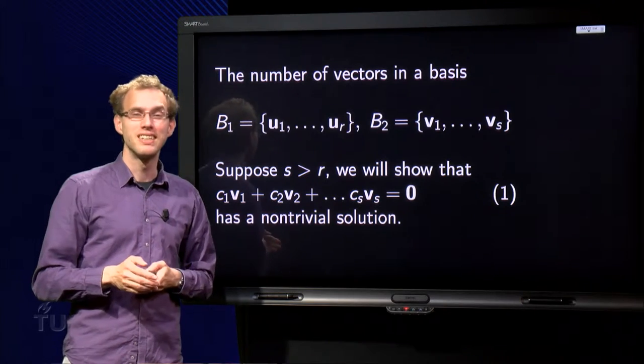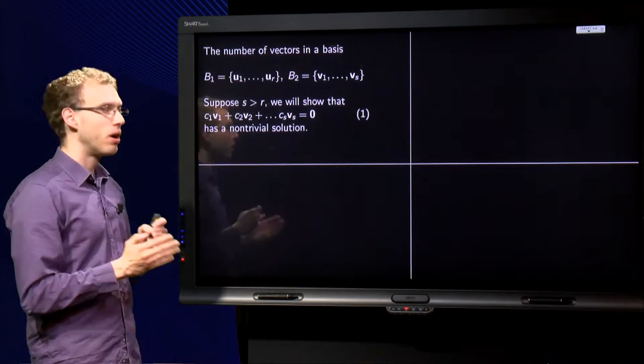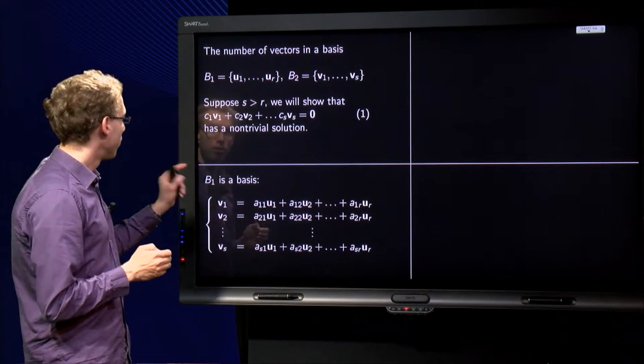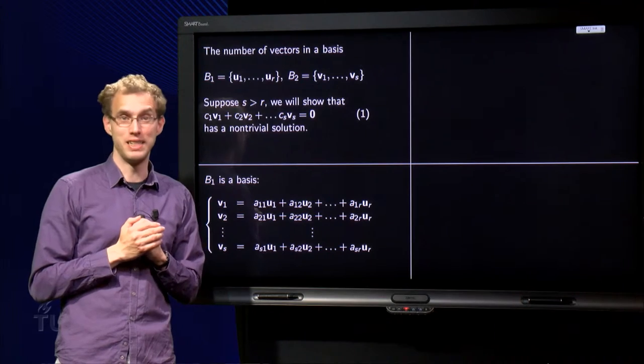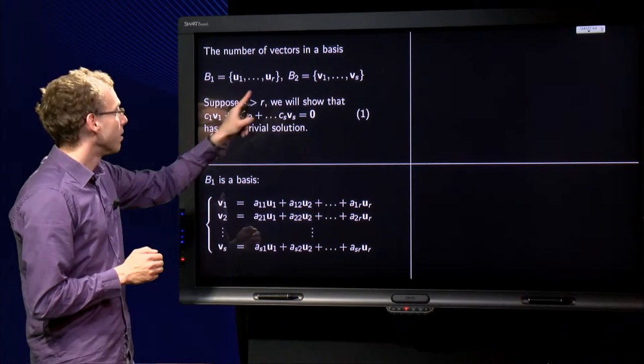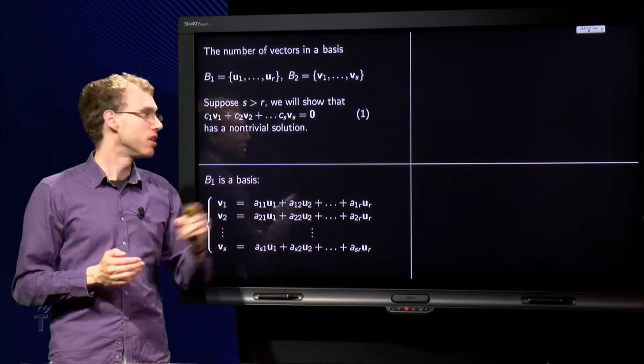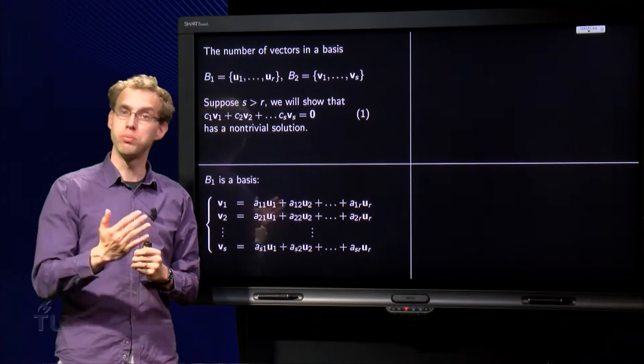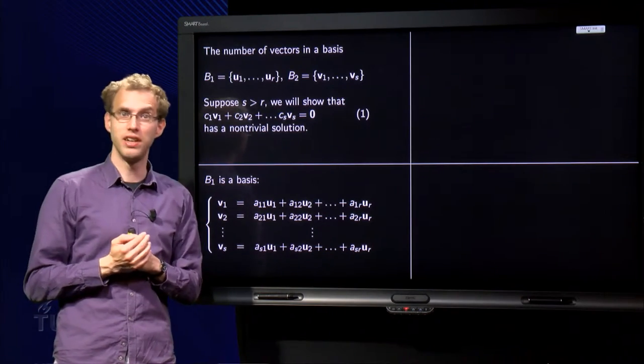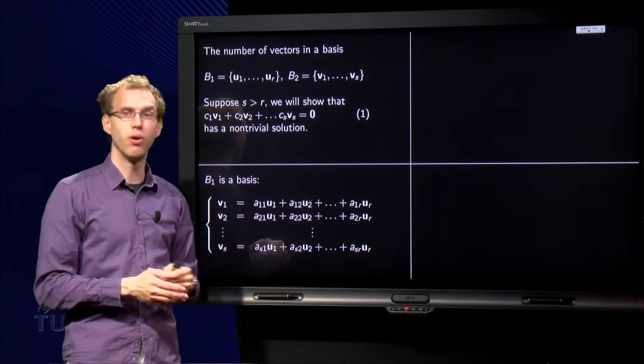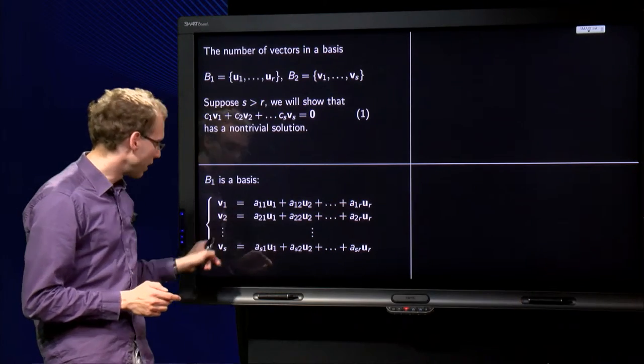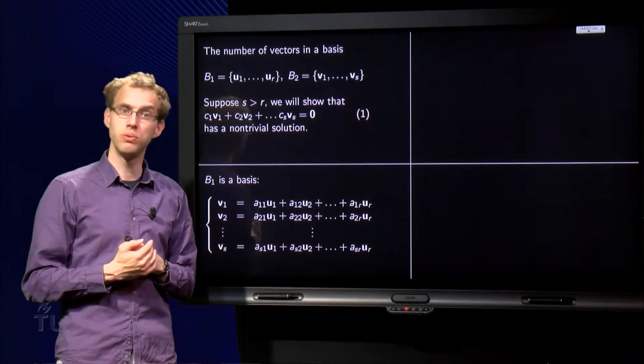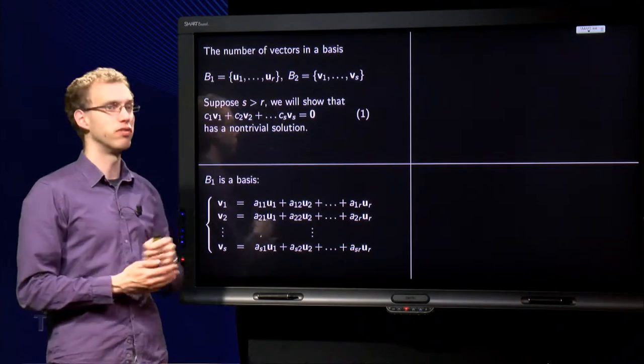Well, the proof is kind of messy. So what are we going to do? Well, first of all, we know that B₁ is a basis. That means that we can express v₁, v₂ up to vₛ in terms of the vectors u₁ up to uᵣ. So we write v₁ as a linear combination of u₁, u₂ up to uᵣ, and v₂, etc., up to vₛ. So we express all vectors of B₂ in terms of B₁.